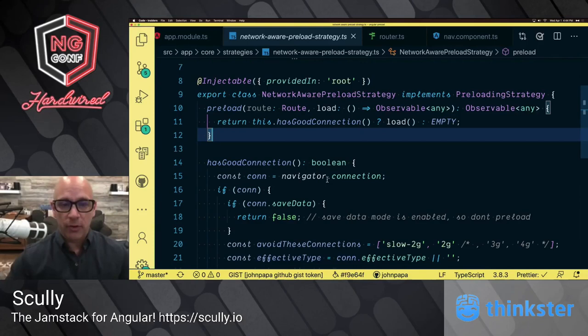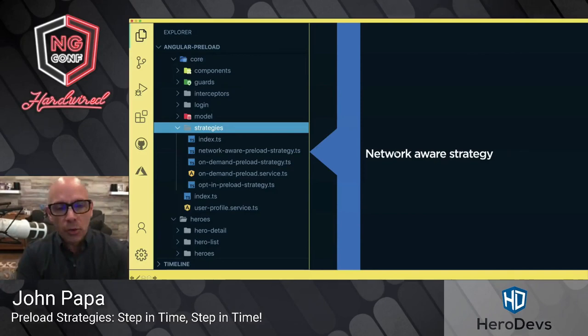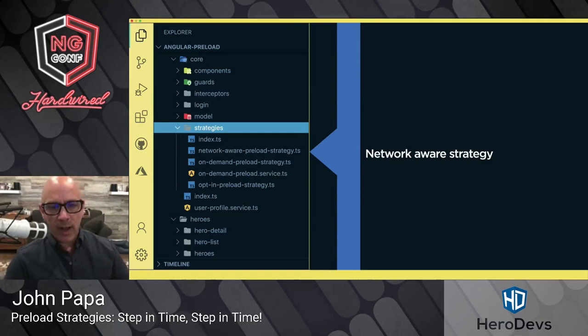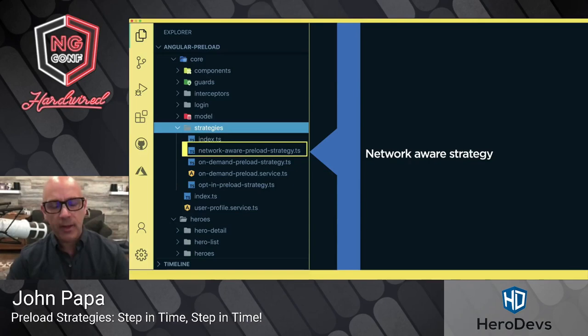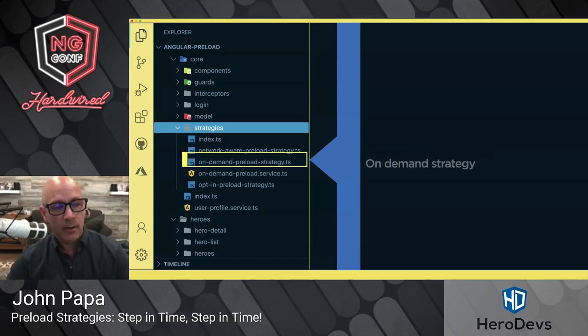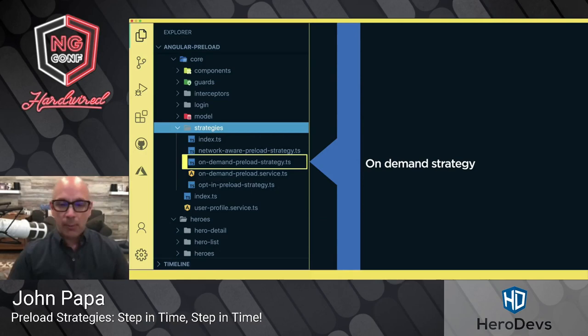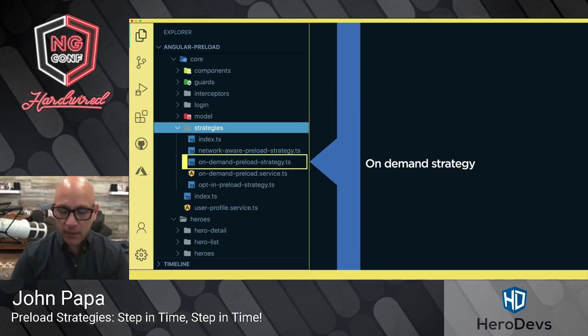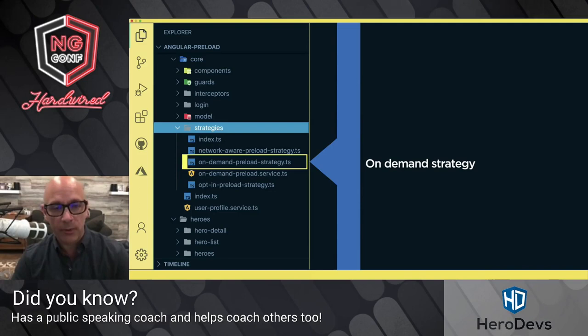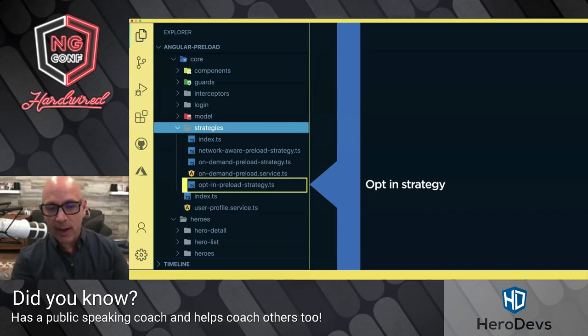The nice thing about these three different strategies is that you can mix and match them any way you like. In hindsight: we've got a network-aware strategy that checks the network you have — really good if your users might not always be on super fast Wi-Fi. You've got on-demand, where you choose how it works — when somebody hovers over a link or presses a button based on user behavior, you preload that thing so users might get that page to come up instantly by the time they actually click on it.